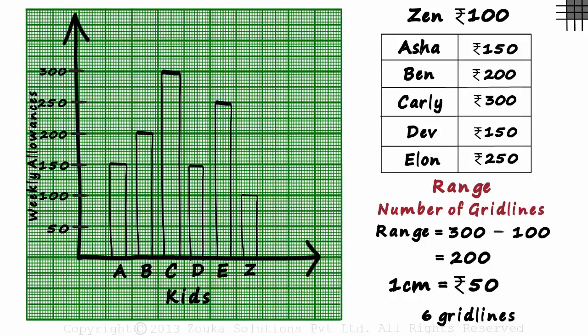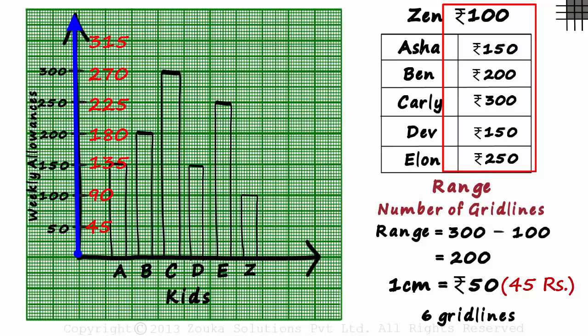We could also have chosen 1 centimeter as 45 rupees. It would still have covered around 7 to 8 grid lines, which fits perfectly into this graph paper. But the y-axis points would have been 45, 90, 135 and would not look very nice. It would also have become a bit difficult to plot these values as they are not multiples of 45.